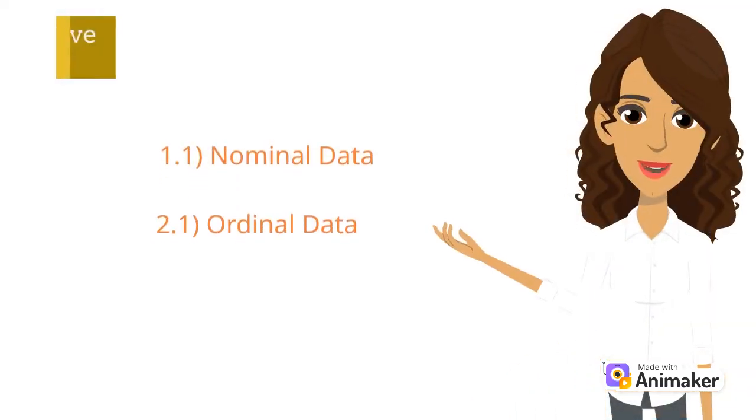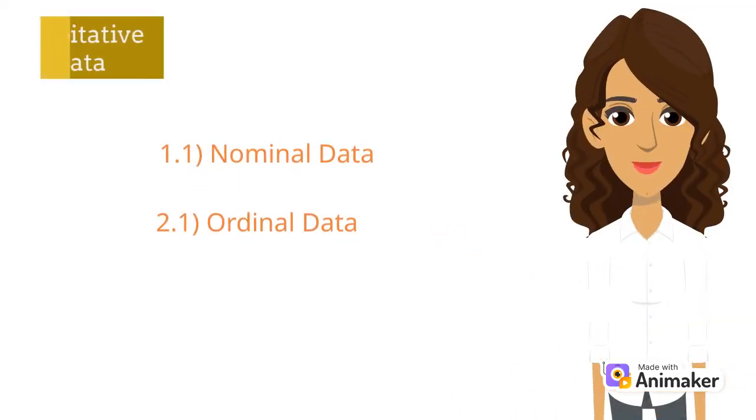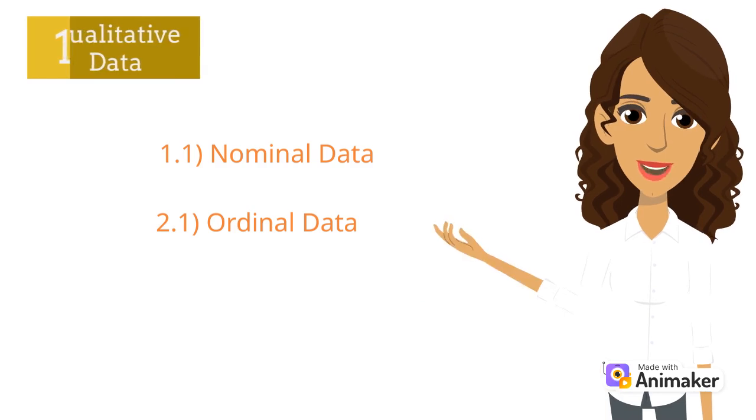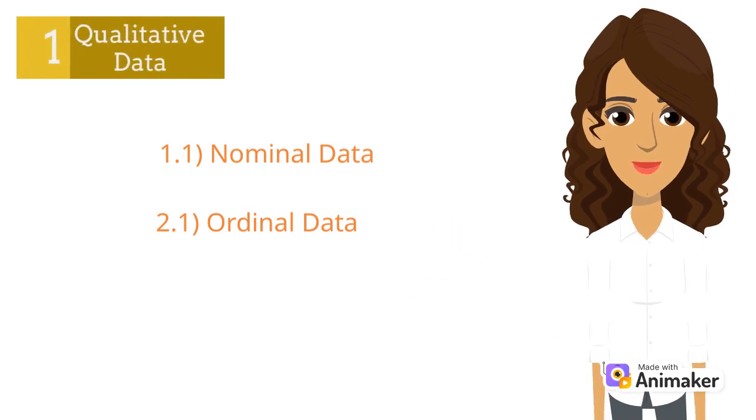Under the qualitative data we have two types: nominal and ordinal. The nominal data describes the gender, hair color, and also ethnicity.